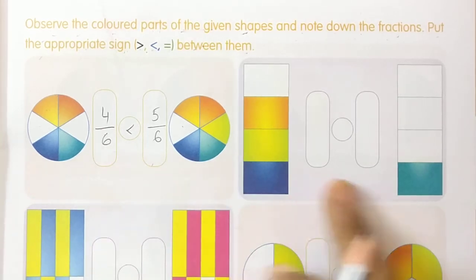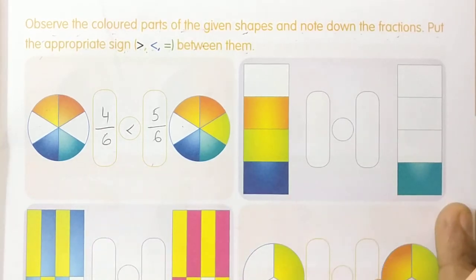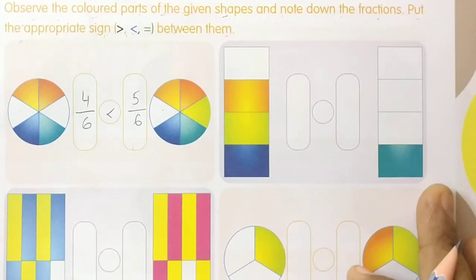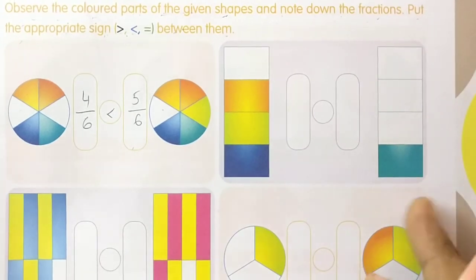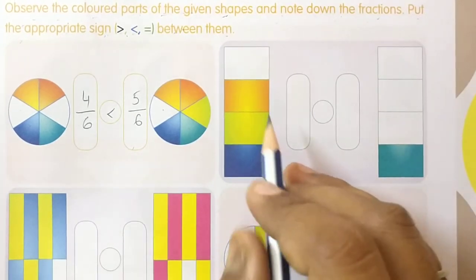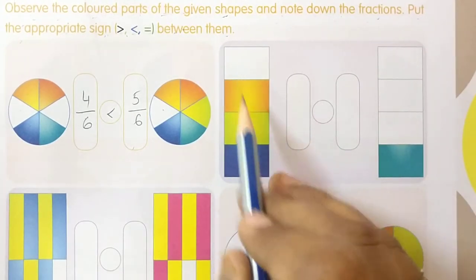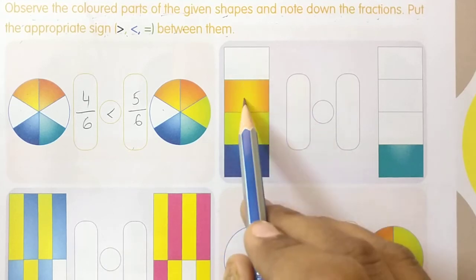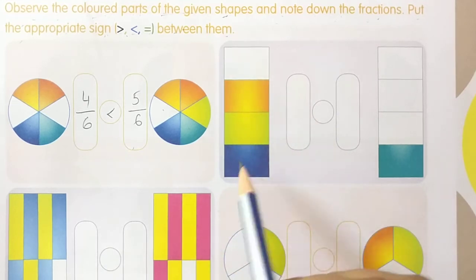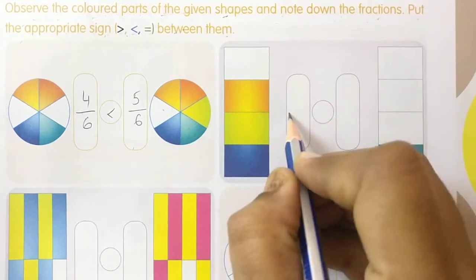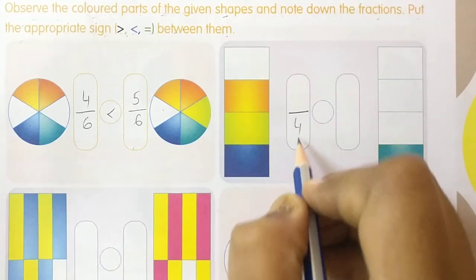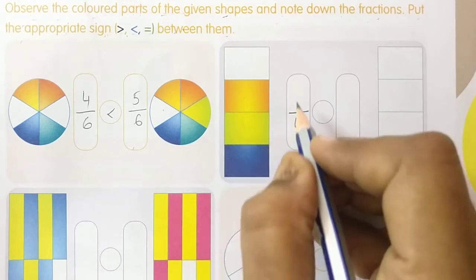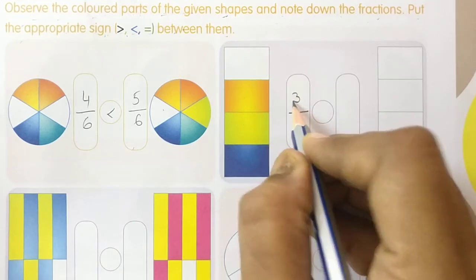Now come to the next one. By observing this shape, how many parts do you have? 1, 2, 3, 4 — total 4 parts. How many are shaded? 1, 2, 3 — so 3 are shaded. The fraction is 3 by 4.